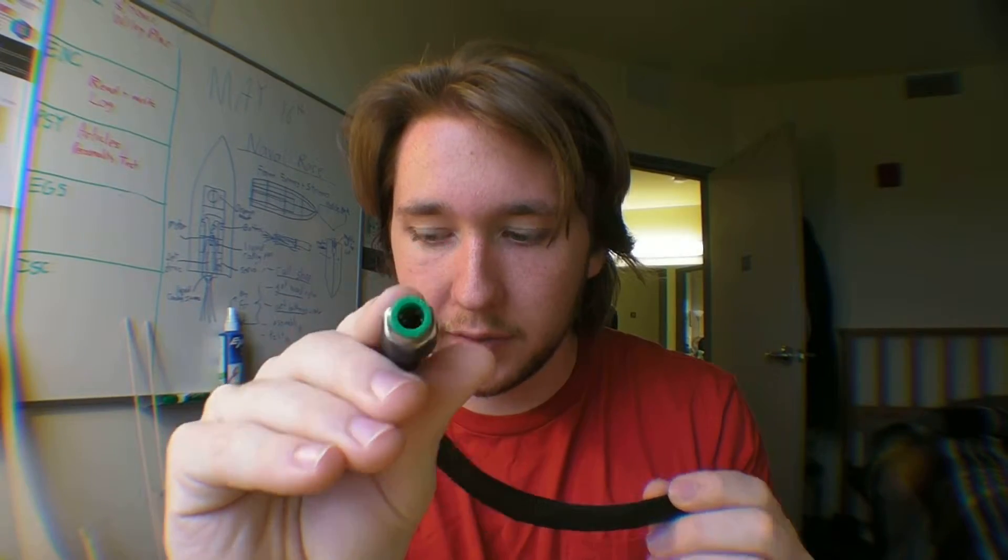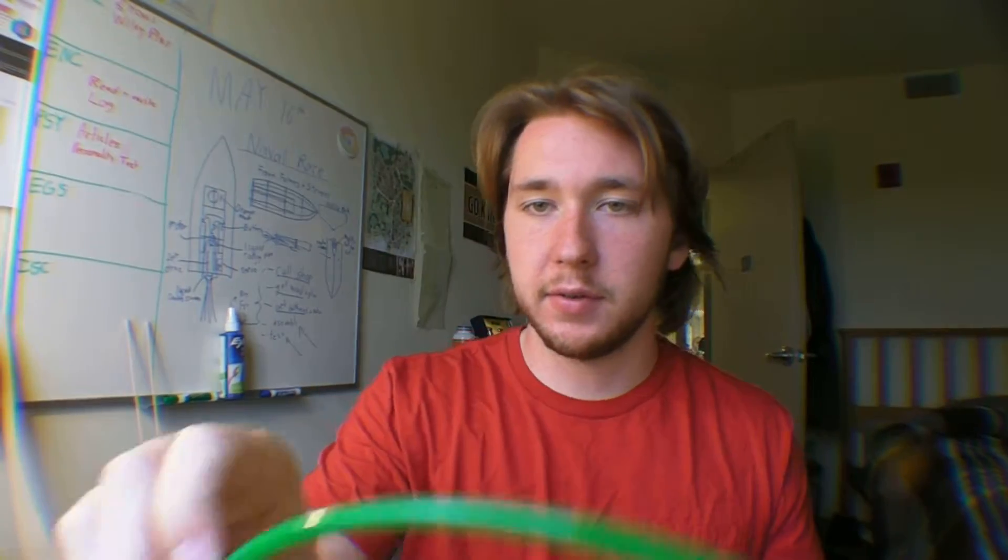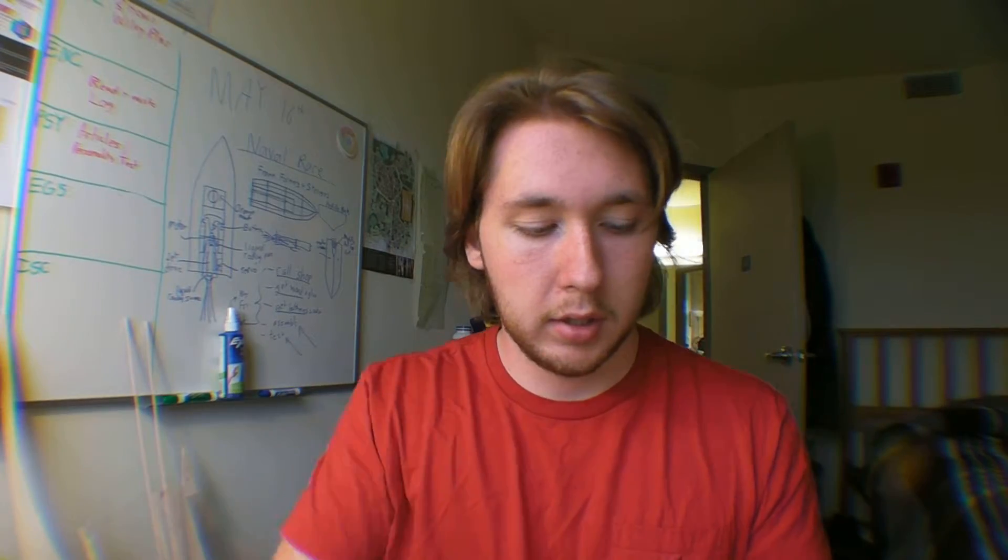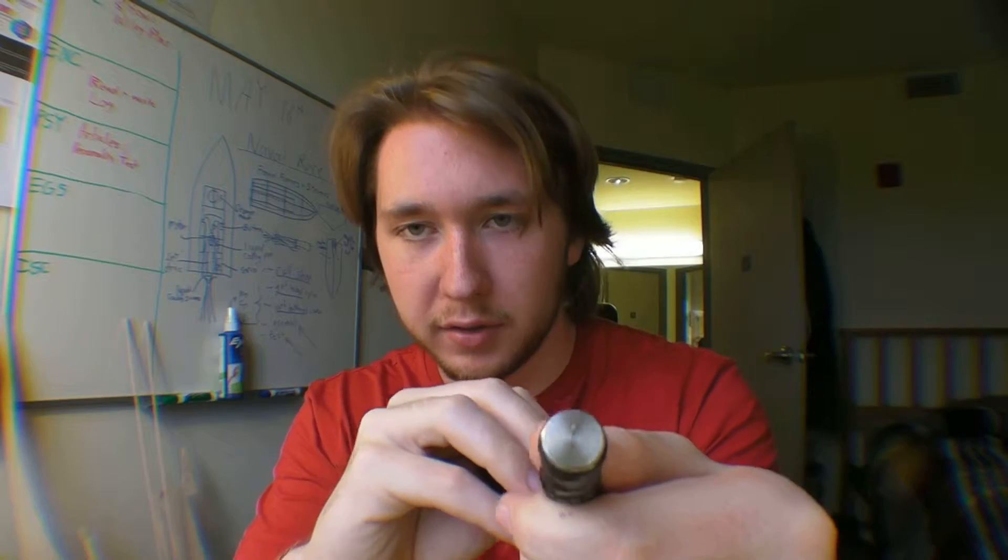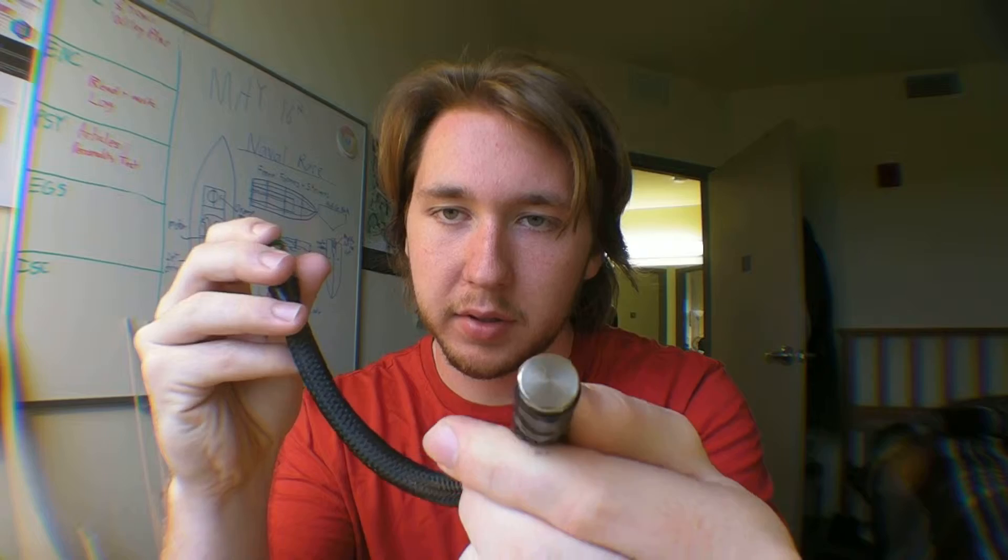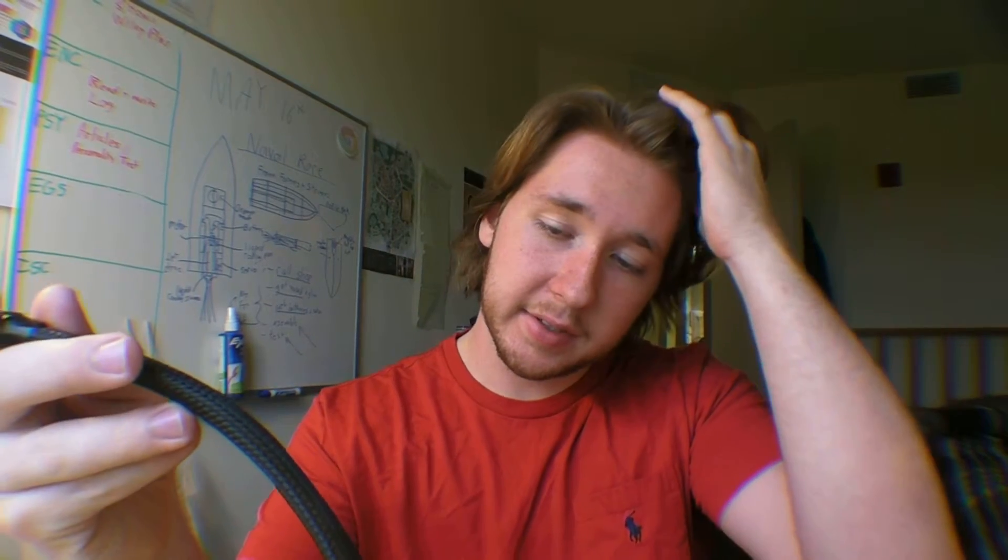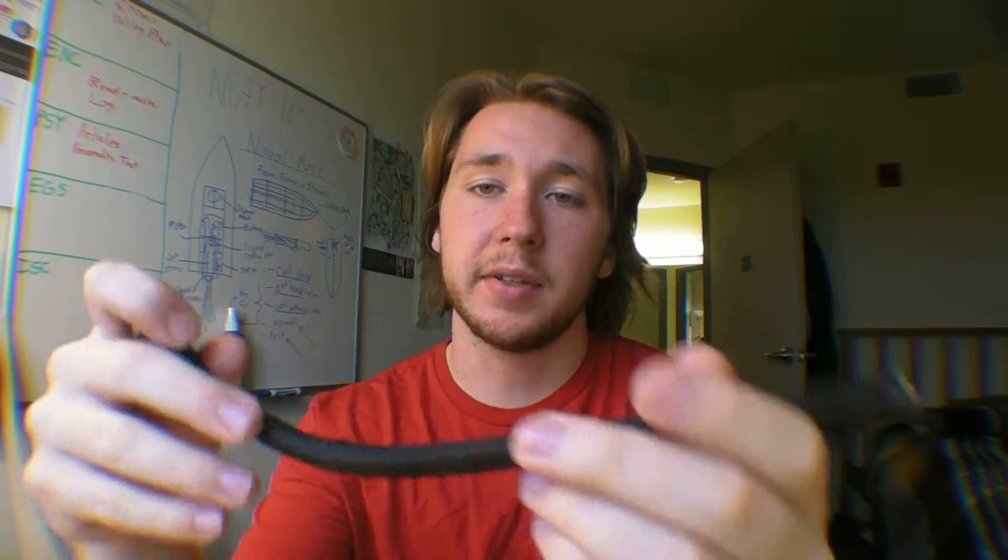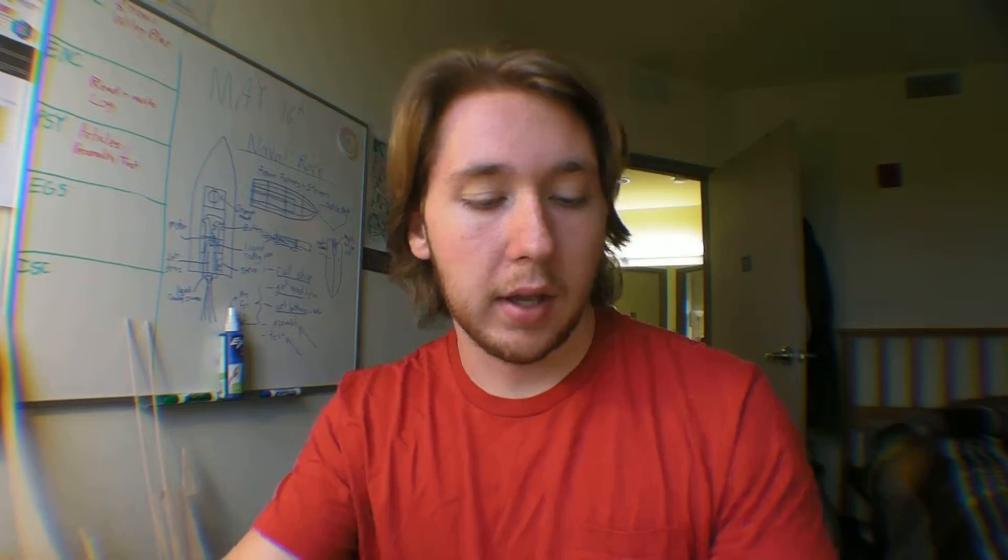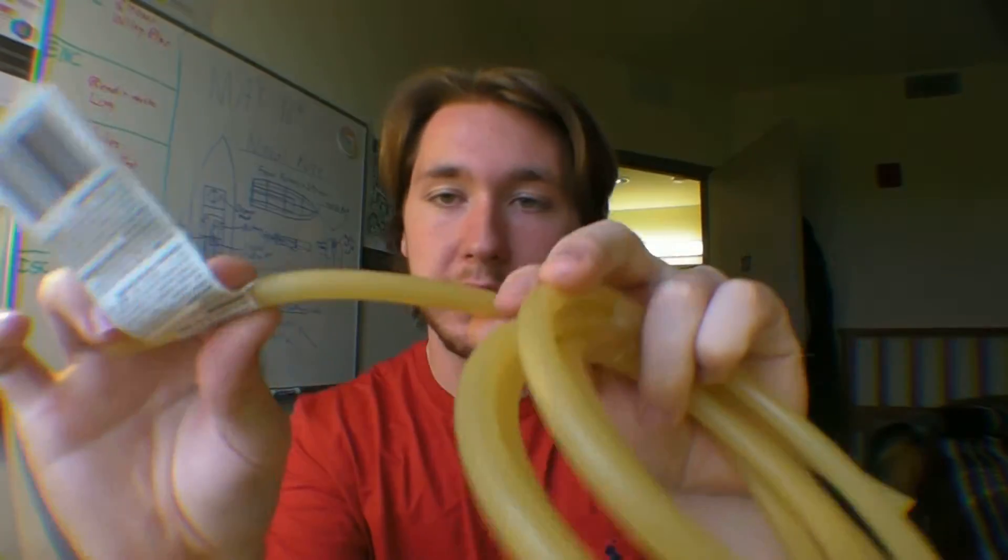Basically all you need in addition to that is a couple fittings. You can use barbed fittings if you want. I actually had these pneumatic fittings laying around that interface with this green tubing here. And then some kind of plug on the other side, or you can actually use another barbed fitting and then just route it, but I just put a plug. And then you can use zip ties. I just used tape because I think that's all I had.